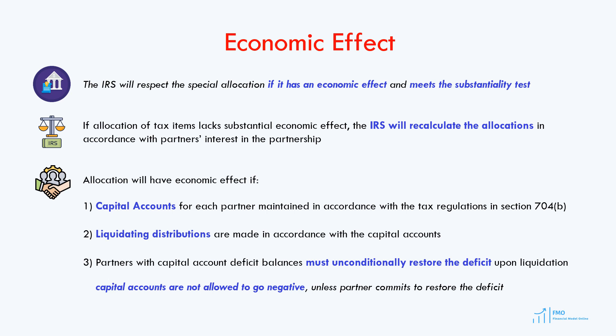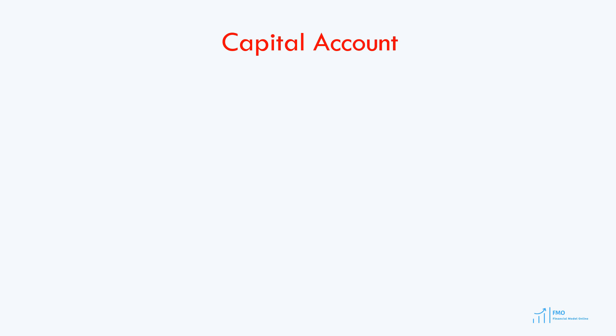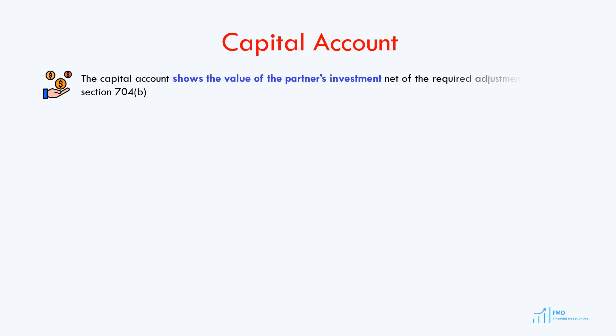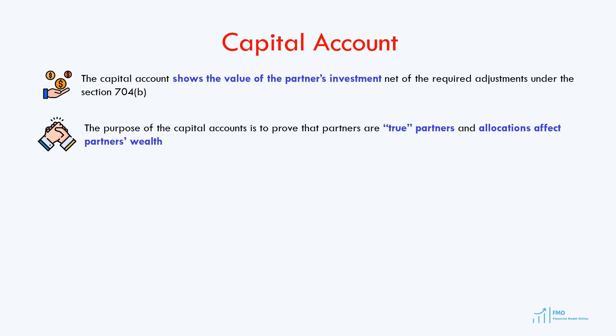The capital account is not allowed to go negative unless the partner commits to restoring the deficit. The capital account is an account which shows the value of the partner's investment net of the required adjustments required by Section 704B. The purpose of the capital account is to prove that the partners are in a true partnership and that the allocation of tax items affects partners' wealth.